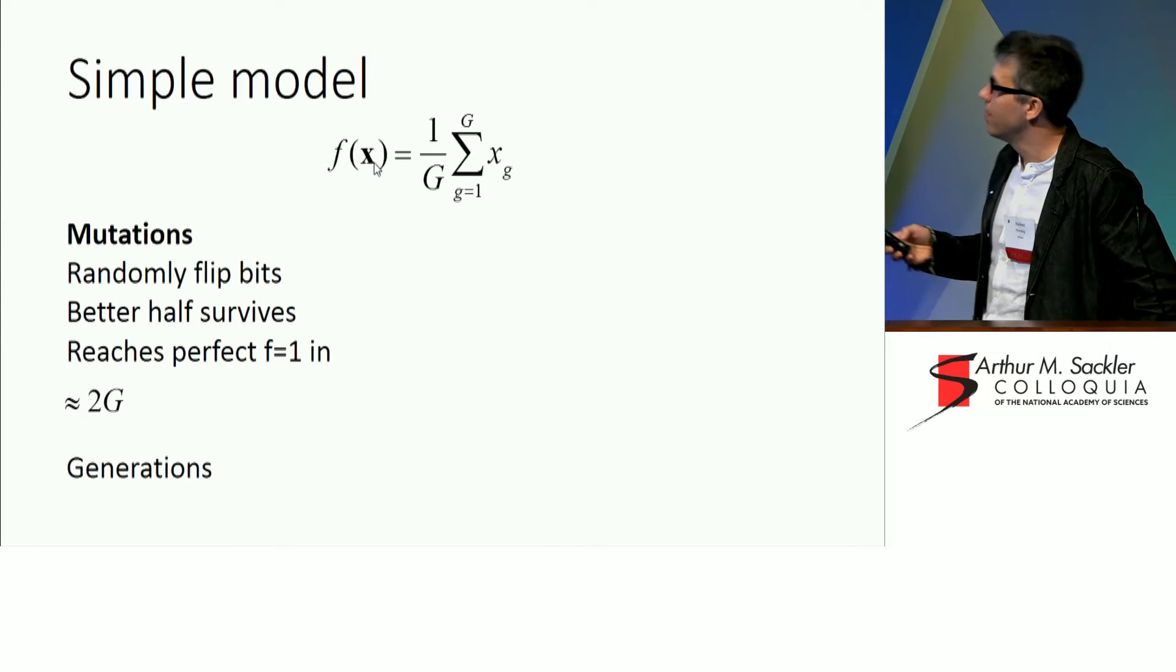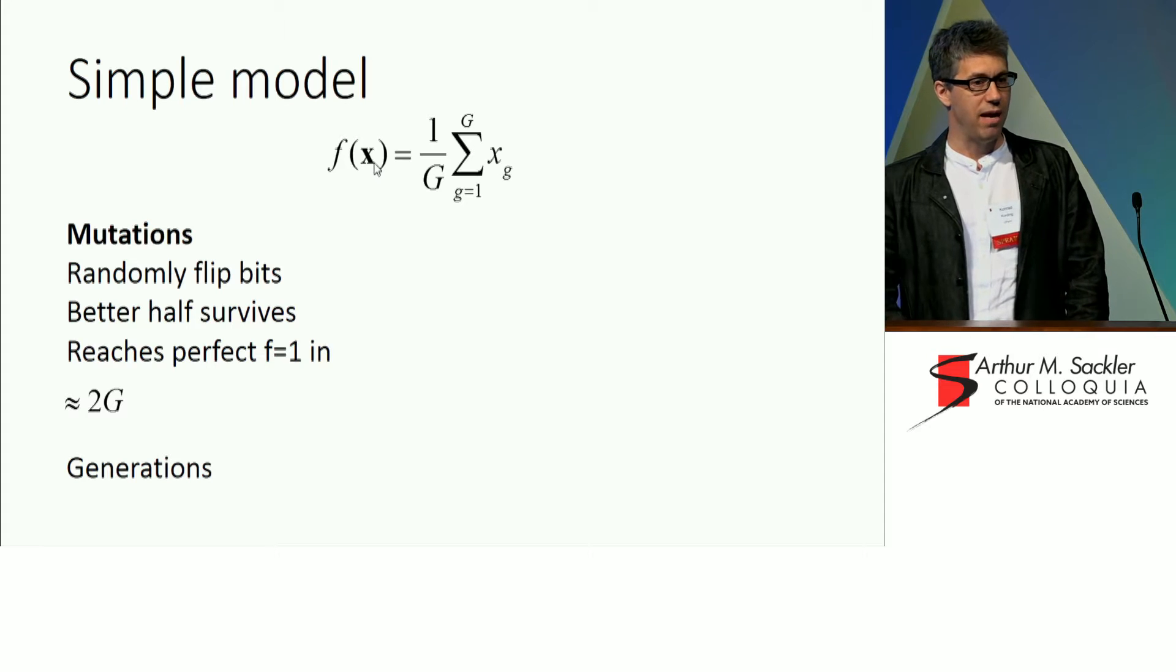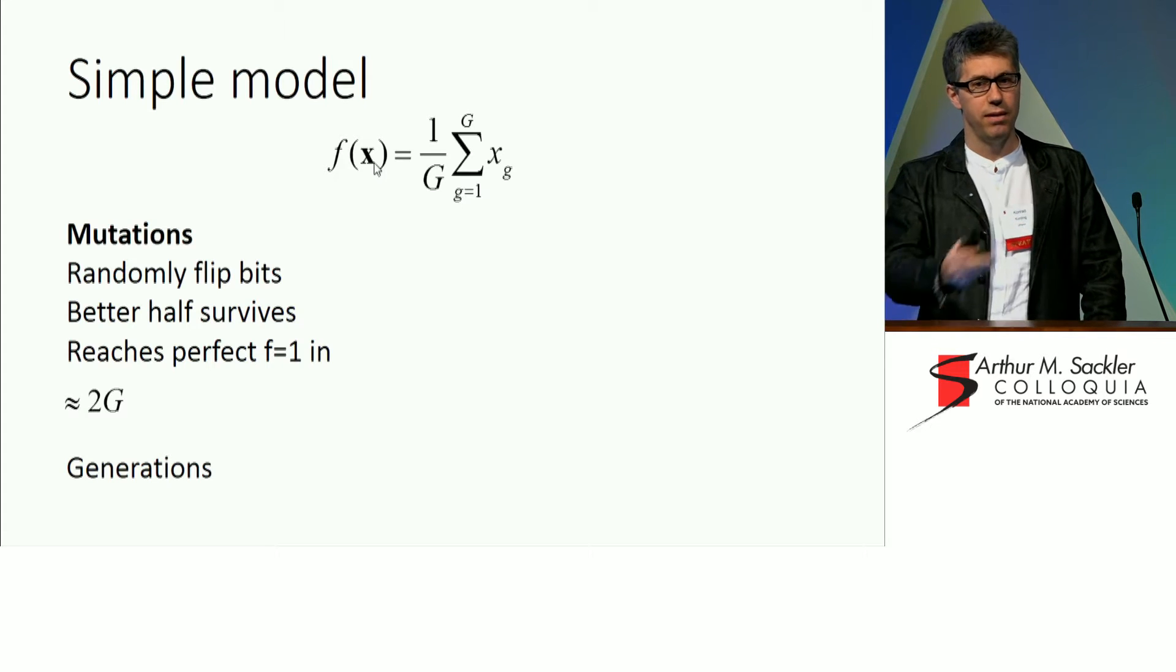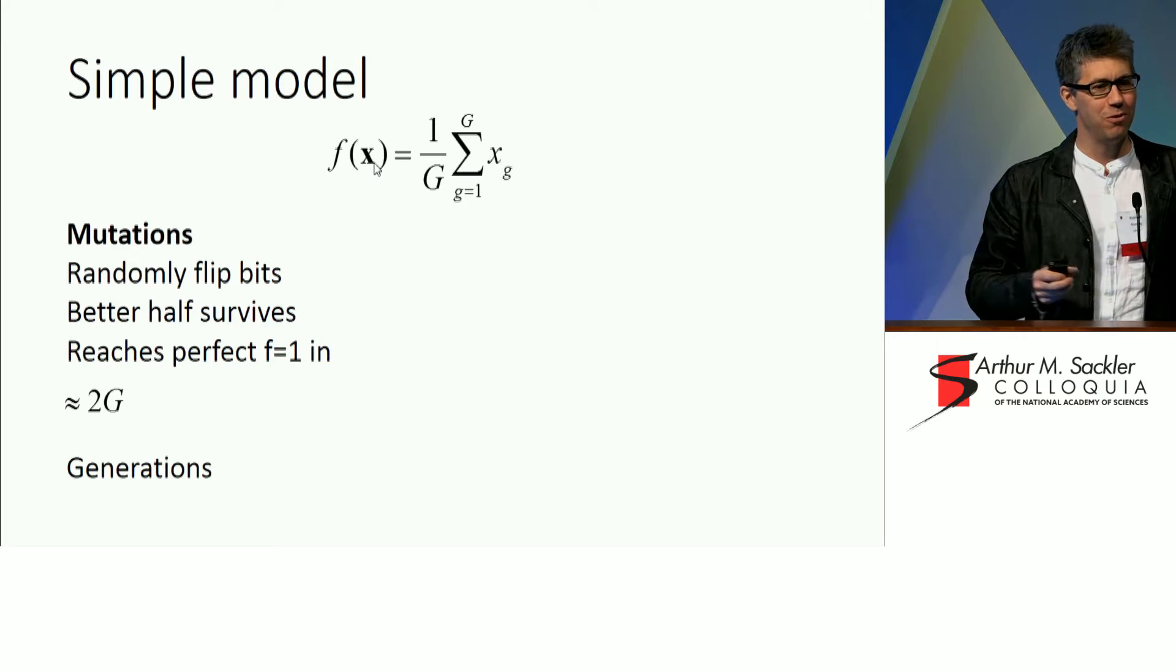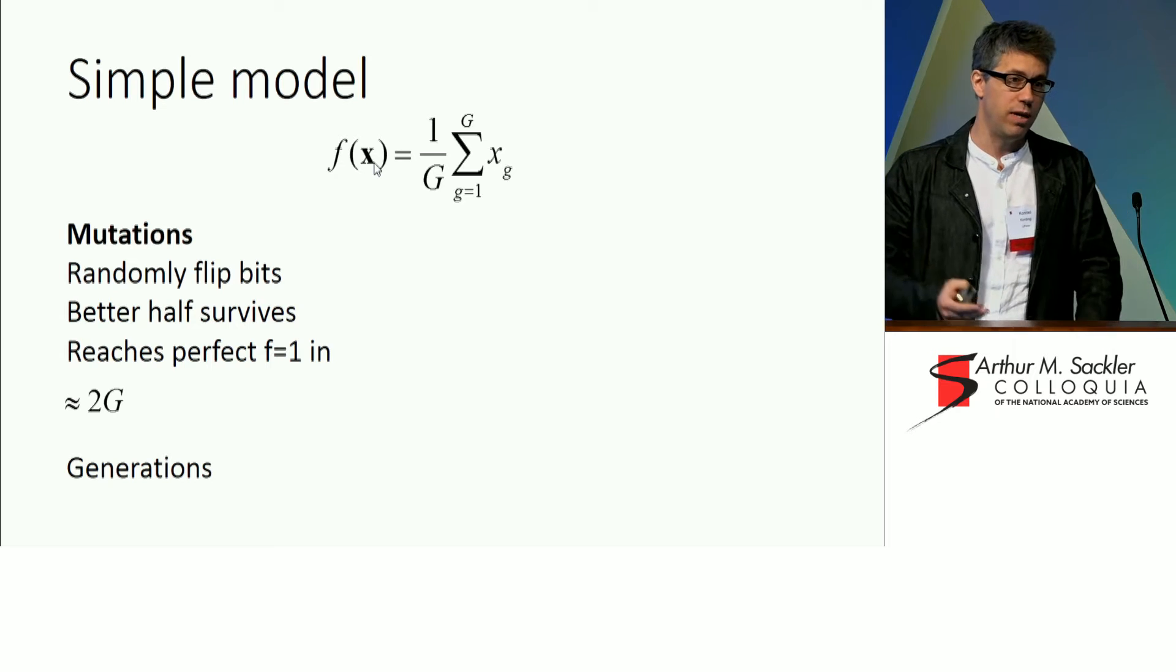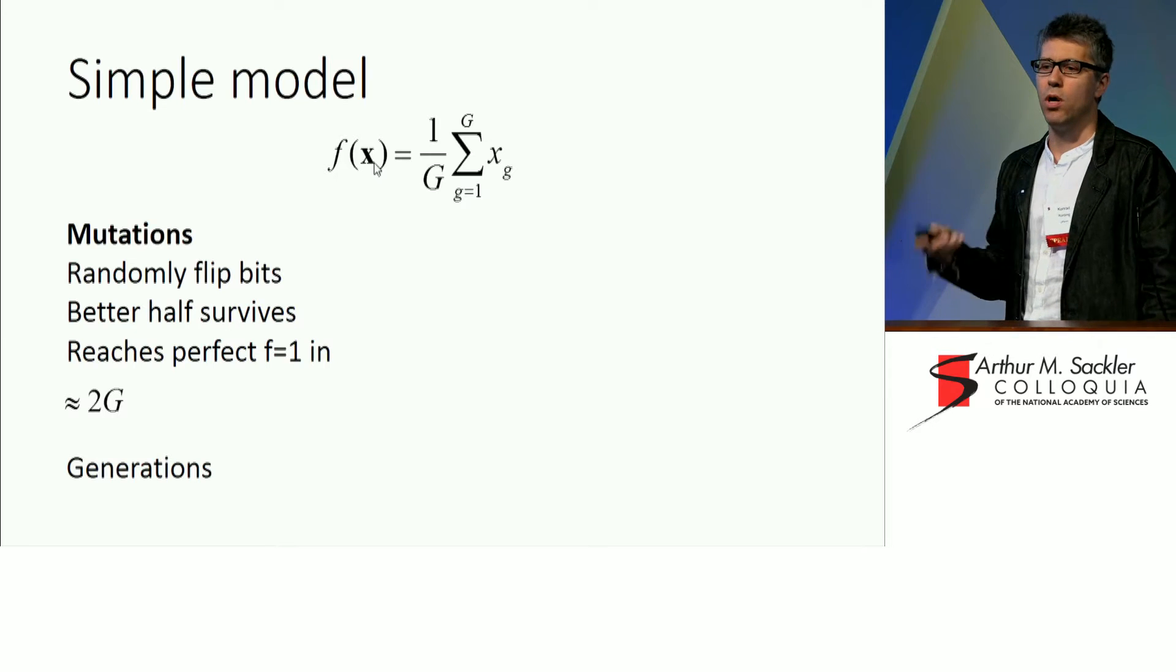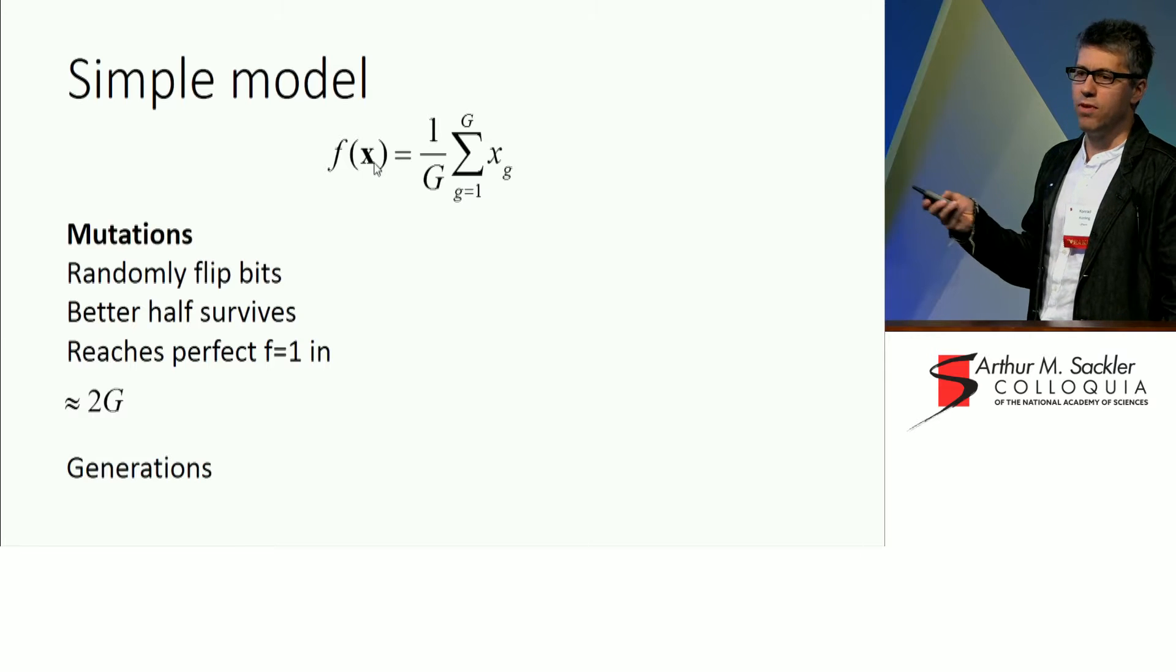And in MacKay's book, there's a beautiful treatment of that. He comes up with the simplest model that you could possibly have for evolution, which is simply that we have fitness, which is the sum of all the bits. Every bit, our DNA, we just have two different nucleotides at each place. One of them is right, the other one is wrong.